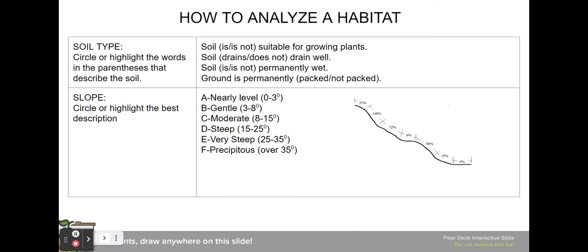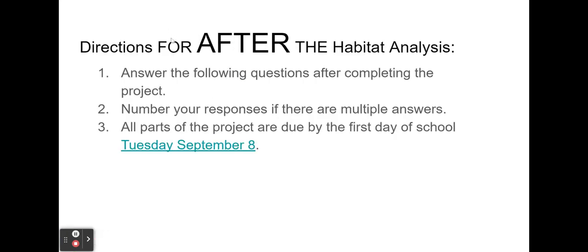Continuing on and analyzing your habitat, you have your soil type and the slope of the soil. When it says circle or highlight the words, you're choosing to make the statement true — either the soil is suitable for growing plants or the soil is not suitable for growing plants. After the habitat analysis, you're going to answer all of the following questions. In your Pear Deck, if there are multiple responses, a box will come up to the right where you can number your responses. All parts of this project are due by the first day of school.